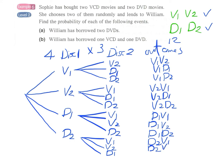And therefore the answer for part A will be William has borrowed two DVDs. For these two DVDs we have a total of 12 possible outcomes and we can see that two DVDs we have only two favorable outcomes therefore this will be 2 over 12 which is 1 over 6.